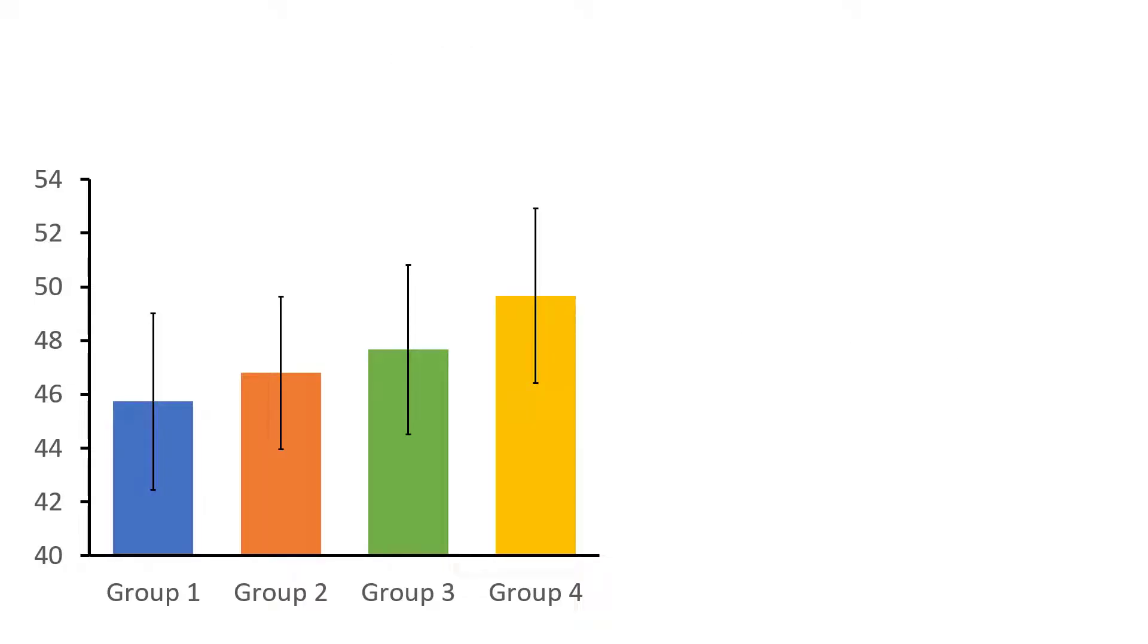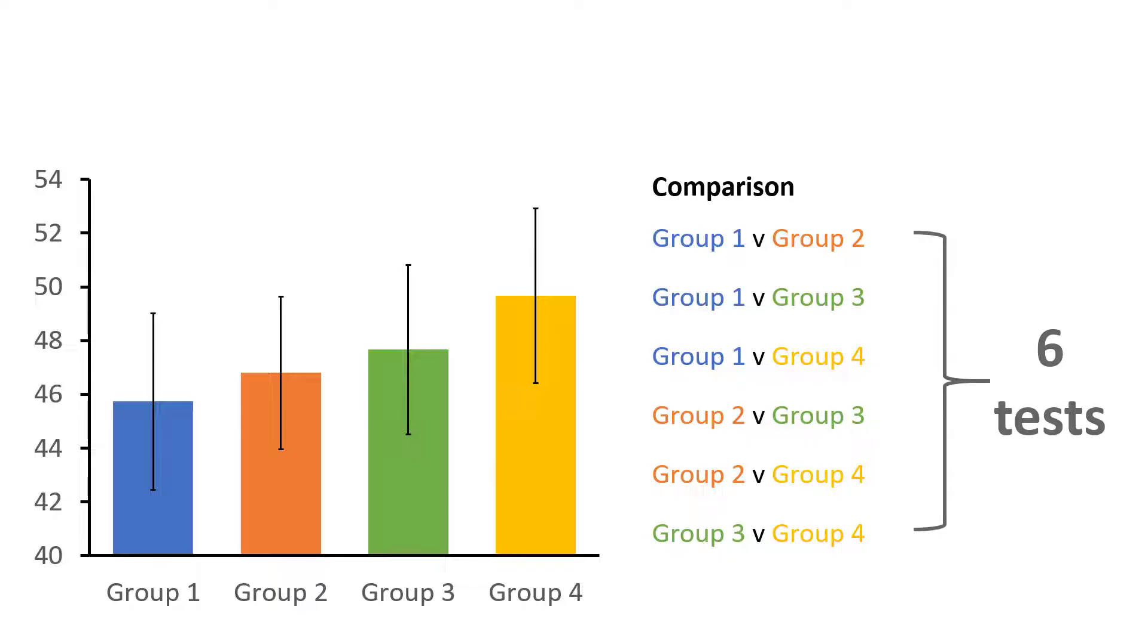And so we usually perform a family of tests comparing each possible comparison. Doing so would mean we'd have to compare the means of group 1 to group 2, group 1 to group 3, group 1 to group 4, and so on and so forth. So in total we need to perform 6 individual tests.